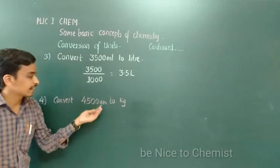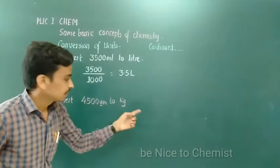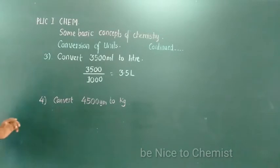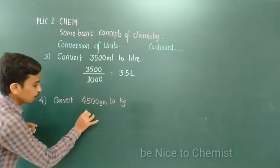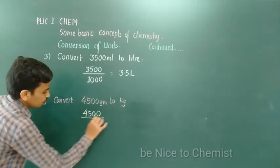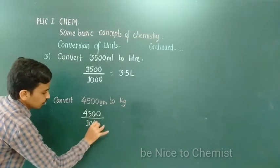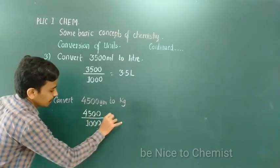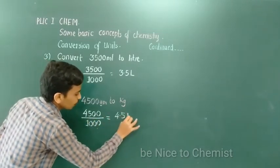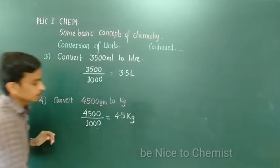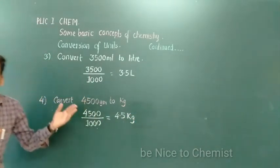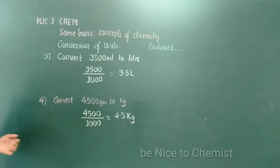Similarly, the next one: convert 4500 grams to kg. Since 1 kg equals 1000 grams, 4500 is divided by 1000 and you get the answer as 4.5 kg. That is the conversion of units here.